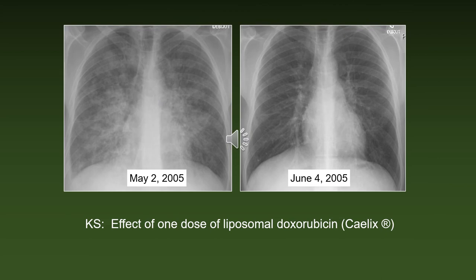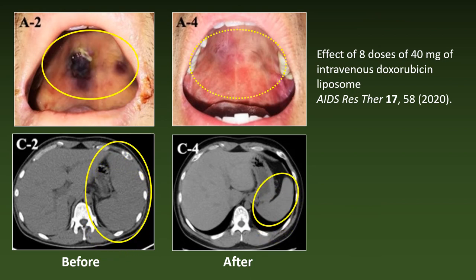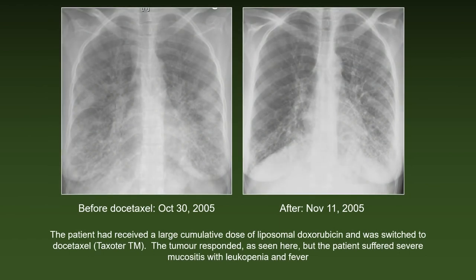Effect of one dose of liposomal doxorubicin in a case of biopsy-proven pulmonary KS. Regression of oral lesions and of splenomegaly after 8 doses of 40 mg per square meter of intravenous liposomal doxorubicin. This patient had received a large cumulative dose of liposomal doxorubicin and was therefore switched to docetaxel — Taxotere. The tumor responded as seen here, but the patient suffered severe mucositis with leukopenia and fever.